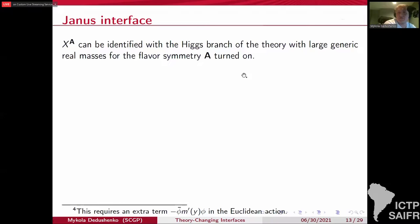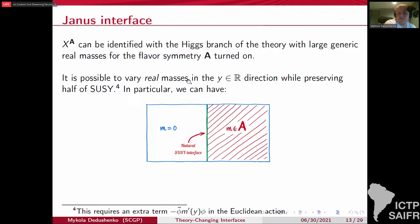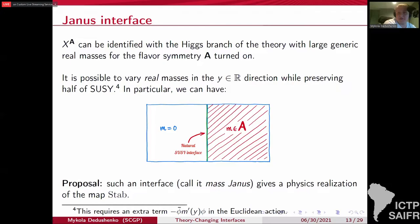And it turns out that you can actually change masses in the supersymmetric way. So recall that R is our Euclidean time direction. It is possible to vary real masses in this direction. If you're in a flat space in any direction, but we are on R times a torus. So we vary real masses in the R direction while preserving one half of supersymmetry. All we have to do is to add this additional term in the action that has the derivative of mass in the Euclidean action. So in particular, we can have the following configuration where a mass is zero on the left and some generic large mass on the right. And there is a natural supersymmetric interface that interpolates between the two regions. So this interface, of course, we'll call mass Janus, following the tradition in the literature for such objects. And the proposal is that it actually realizes stable envelopes in this gauge theoretic context.